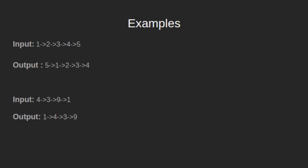Let's see some examples to demonstrate the above problem. In the first example, we have a linked list 1 2 3 4 5. After moving the last element to front, we get the linked list as 5 1 2 3 4.